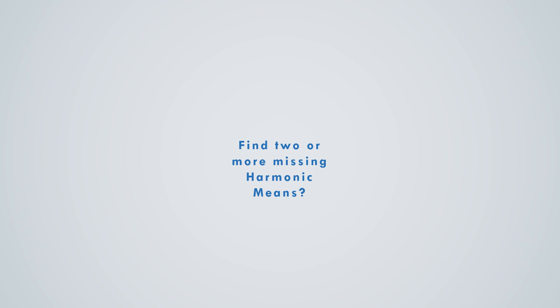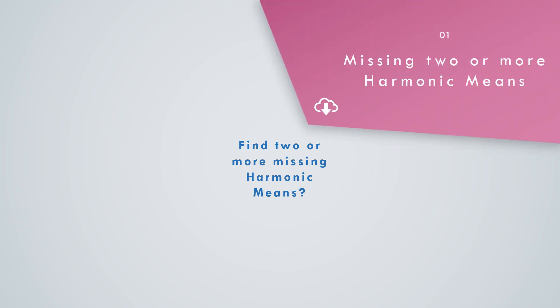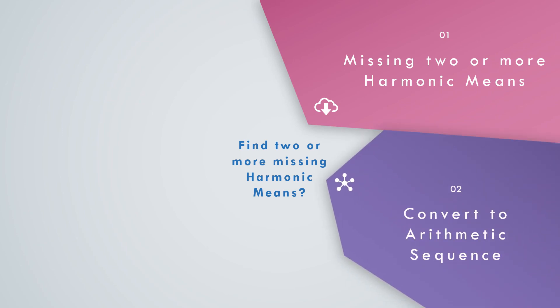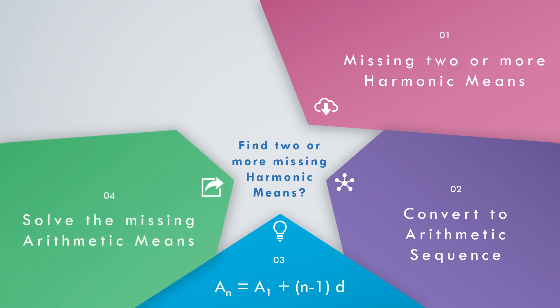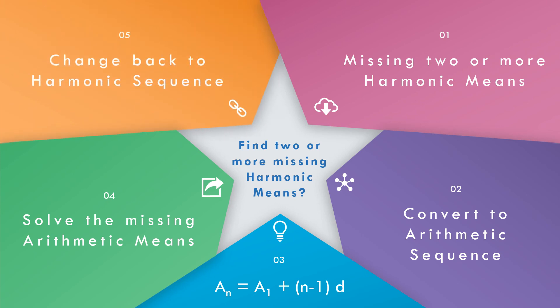When the missing term is 2 or more, get the reciprocal of the harmonic sequence to convert it to an arithmetic sequence. Use the formula a_n = a_1 + (n − 1)d to solve for the common difference. Then solve for the missing arithmetic terms, and finally get their reciprocals — those are the harmonic means.